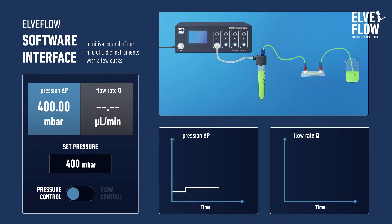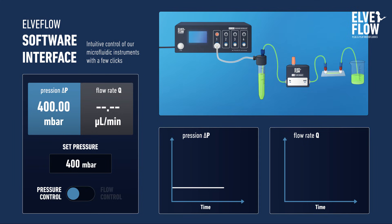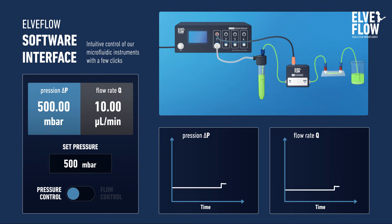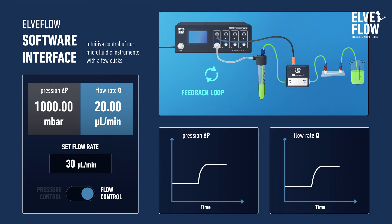A pressure-driven flow controller only provides direct access to pressure. To access flow rate values, one needs to add a flow rate sensor to the setup. Combining a pressure flow controller and a flow sensor offers the advantage of working in either pressure control with flow rate monitoring, or in flow rate control with the inlet pressure automatically adapting to reach the target flow rate. This is achieved through a feedback loop between the flow sensor and the pressure controller via the control software.